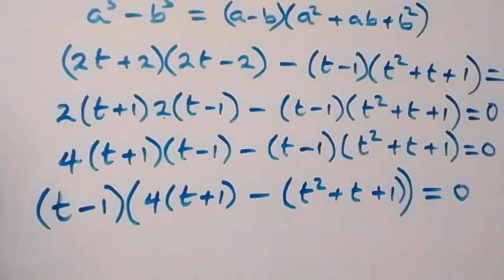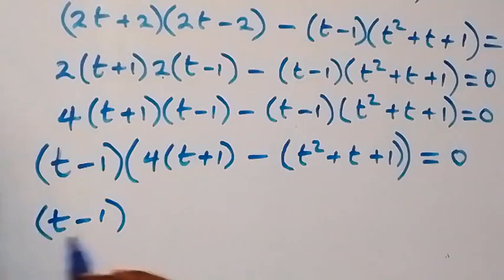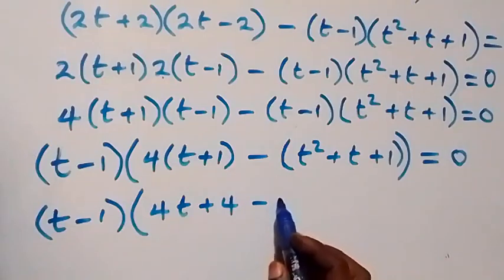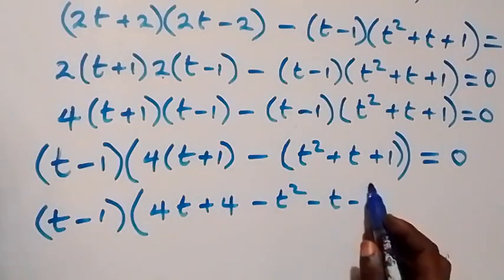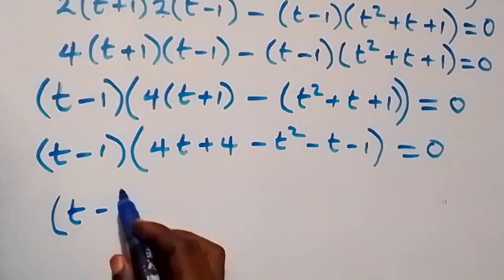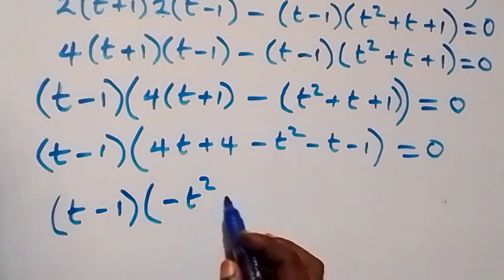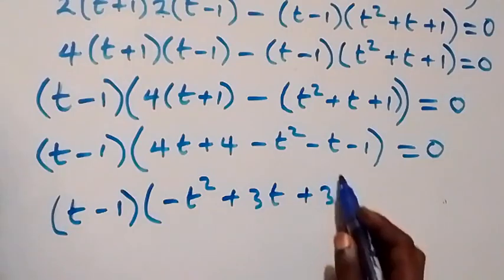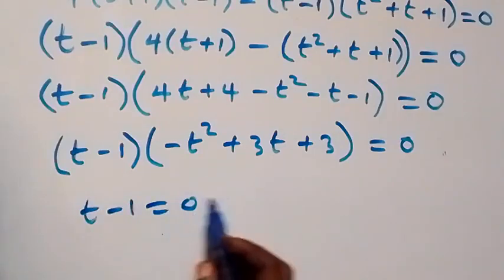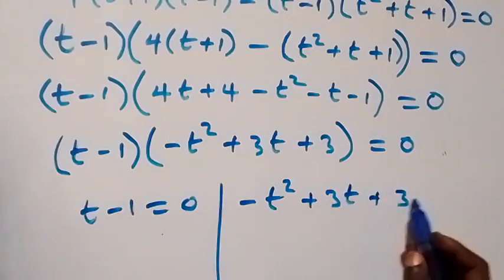Expanding the inner bracket, we get (t minus 1) times (4t plus 4 minus t squared minus t minus 1) equals 0. Rearranging, this becomes (t minus 1)(minus t squared plus 3t plus 3) equals 0. The two cases are: t minus 1 equals 0, or minus t squared plus 3t plus 3 equals 0.